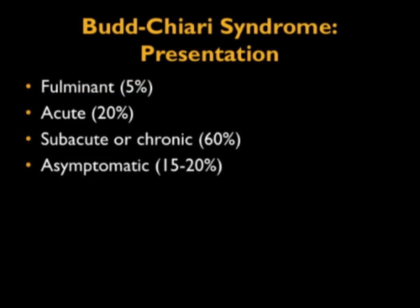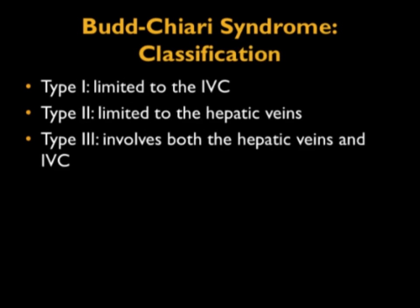With Budd-Chiari, about 5% of cases are fulminant with full-out liver failure. Most of the time it's a subacute or chronic presentation. About 20% of the time it's acute. So about two-thirds of the time it's a slow presentation. We can classify it as type 1, limited to the IVC; type 2, limited to the hepatic veins; or type 3, involving both hepatic veins and IVC.